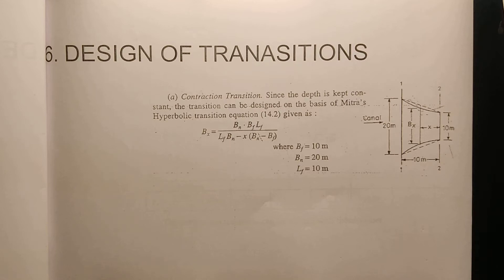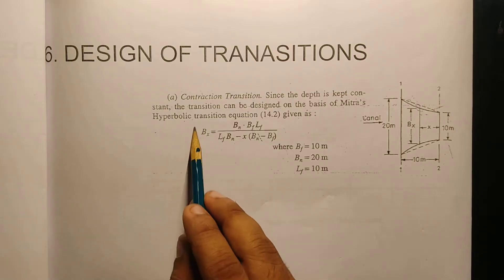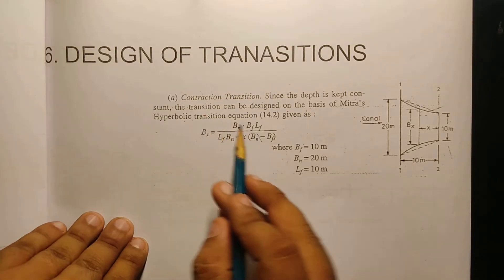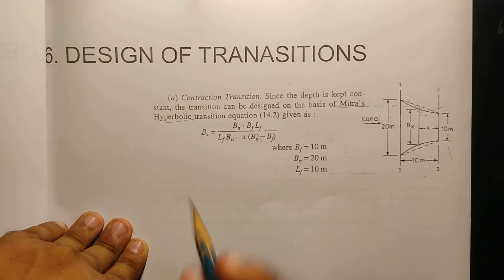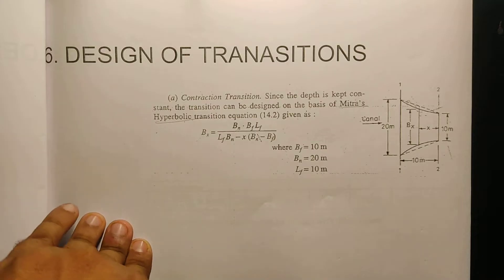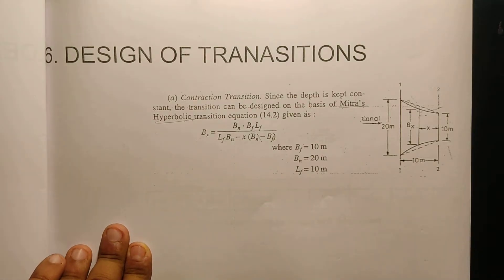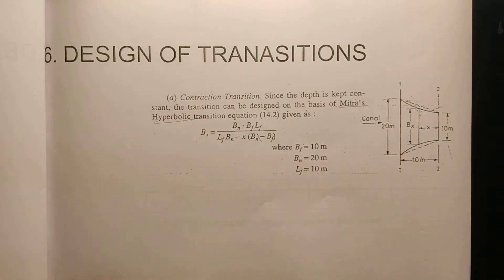We are doing design of transitions. Transitions have an expansion of construction and there is an equation. We study this equation called the Mittharas Hyperbolic Transition equation. We interpret it with constant depth, considering the significance of the Mittharas Hyperbolic Transition. Then we take the dimension of the equation.